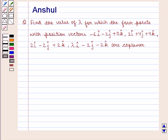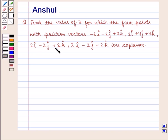Hello and welcome to the session. In this session we are going to discuss the following question: Find the value of lambda for which the 4 points with position vectors minus 6i minus 2j plus 0k, 2i plus 4j plus 4k, 2i minus 2j plus 2k, and lambda i minus 2j minus 2k are coplanar. Let us proceed with the solution.